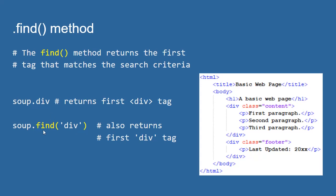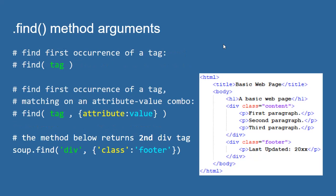I can call the find method from my entire soup object, or I can call it from a specific tag in my soup. For example, if I said soup.div.find('p'), I would return the first p inside that div tag. So I can call find from any tag object. What find gives us in addition to just navigating the parse tree is the ability to pass in a key-value pair to search for and match on.